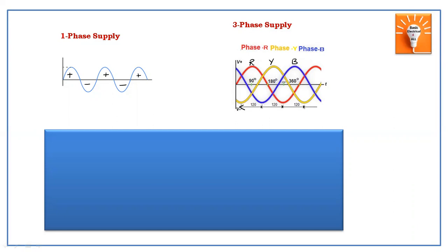From phase R to phase Y there is 120 degrees, phase Y to phase B is 120 degrees, and phase B to phase R again is 120 degrees. Initially, phase R will start from zero. After 120 degrees, phase Y will start. Again after 120 degrees, phase B will start. This is the three phase waveform.